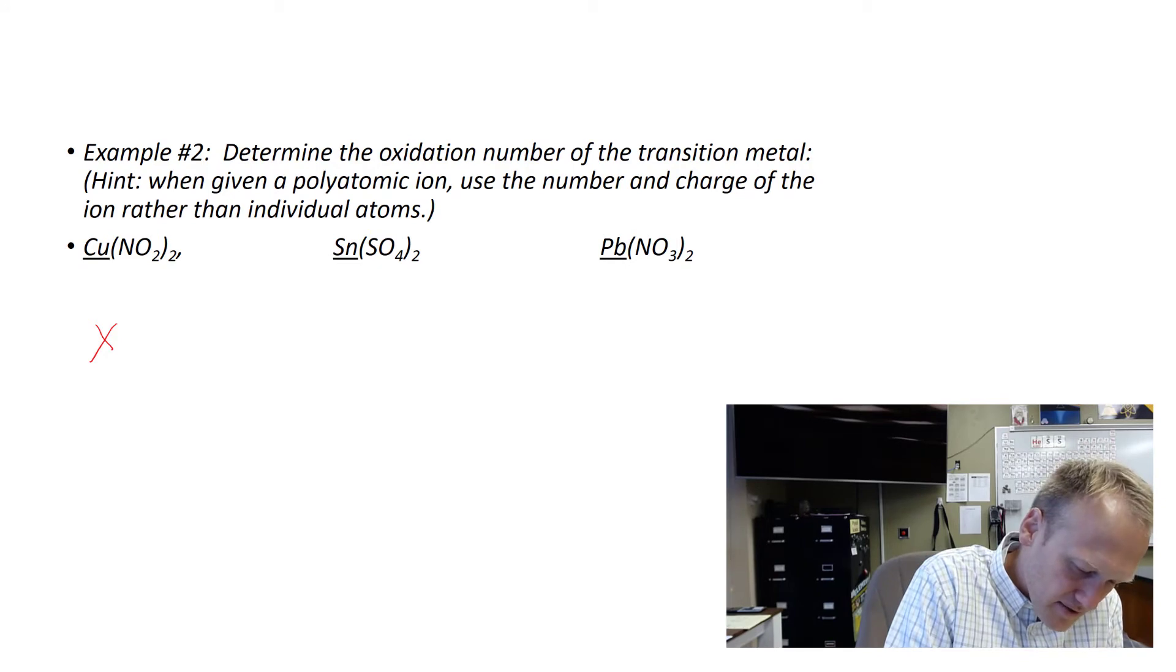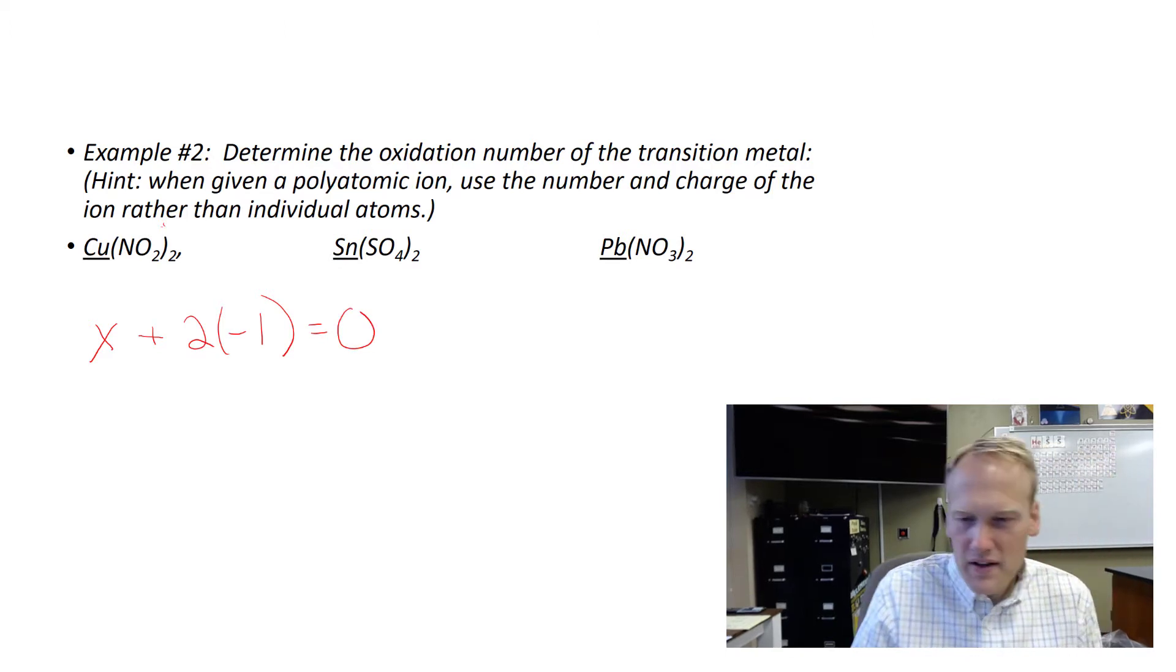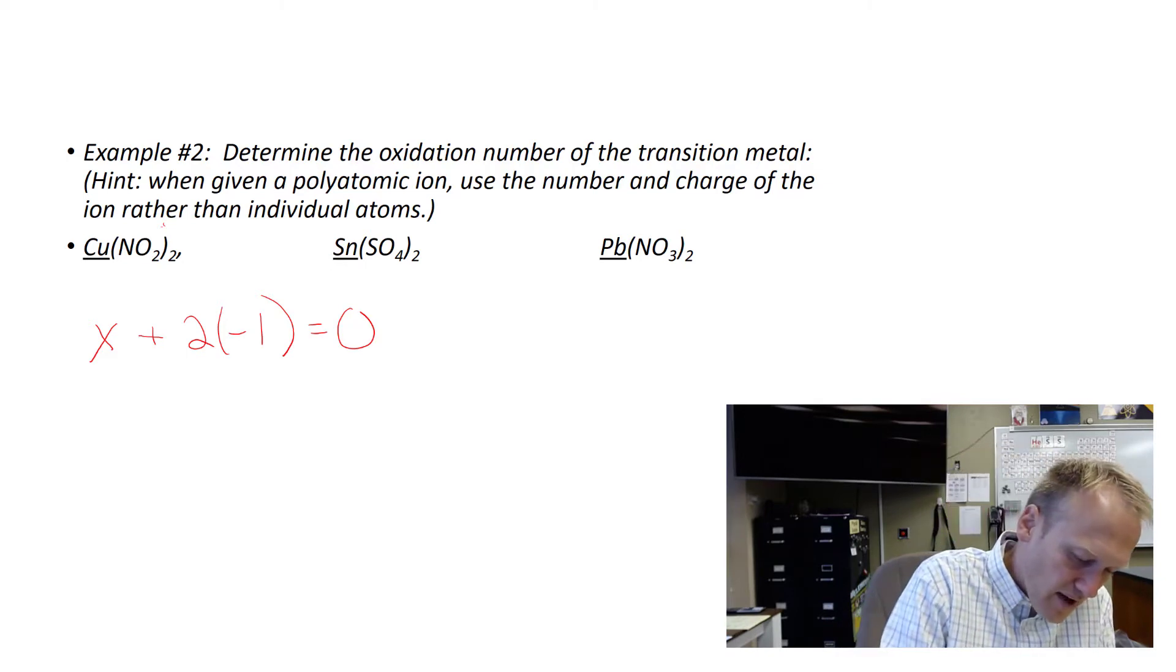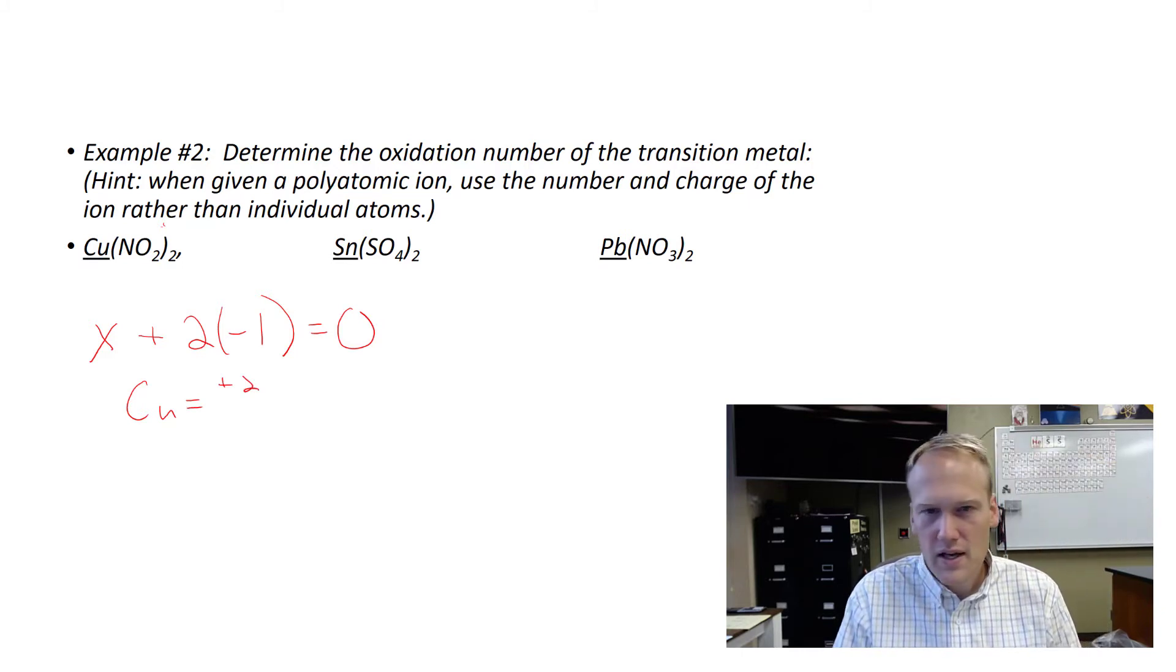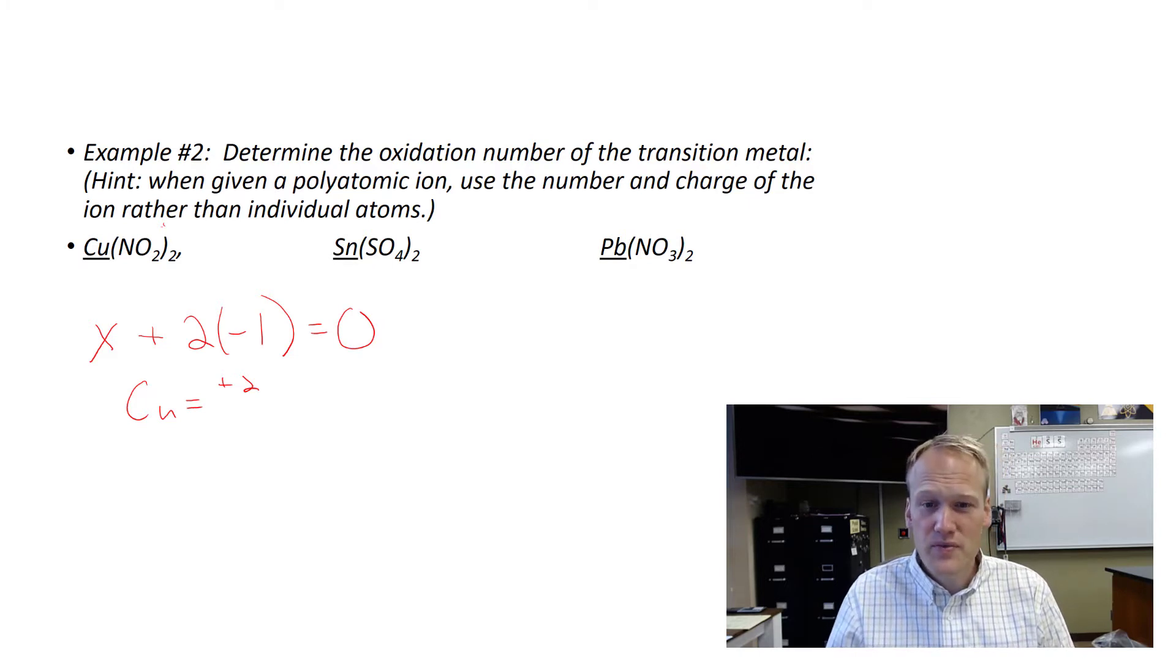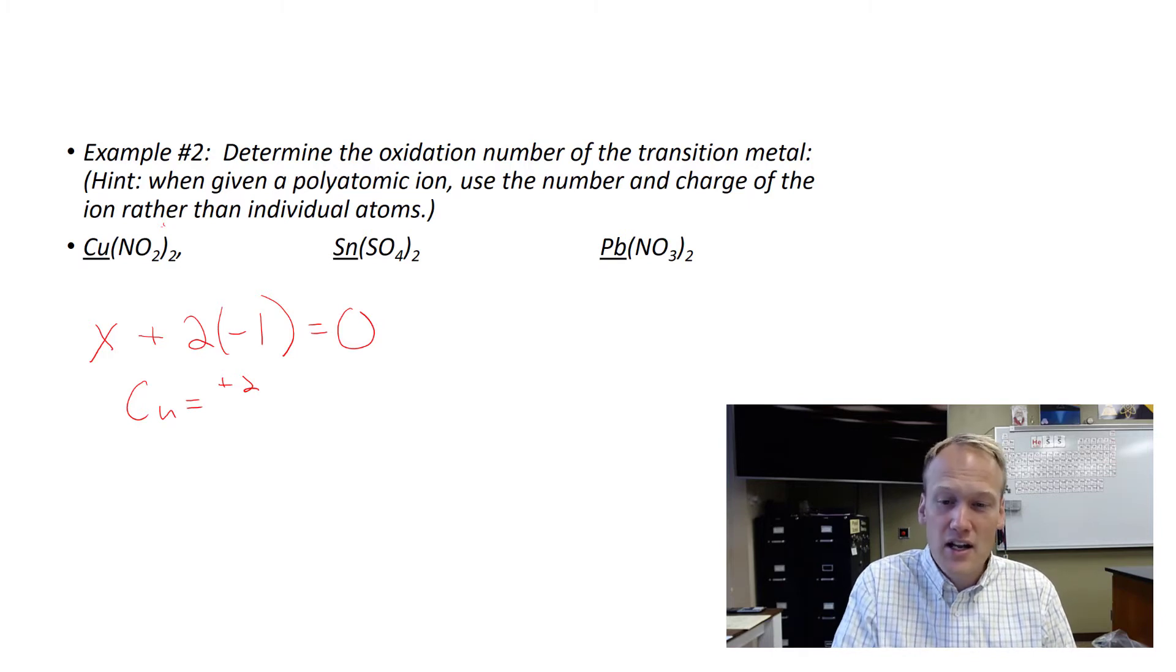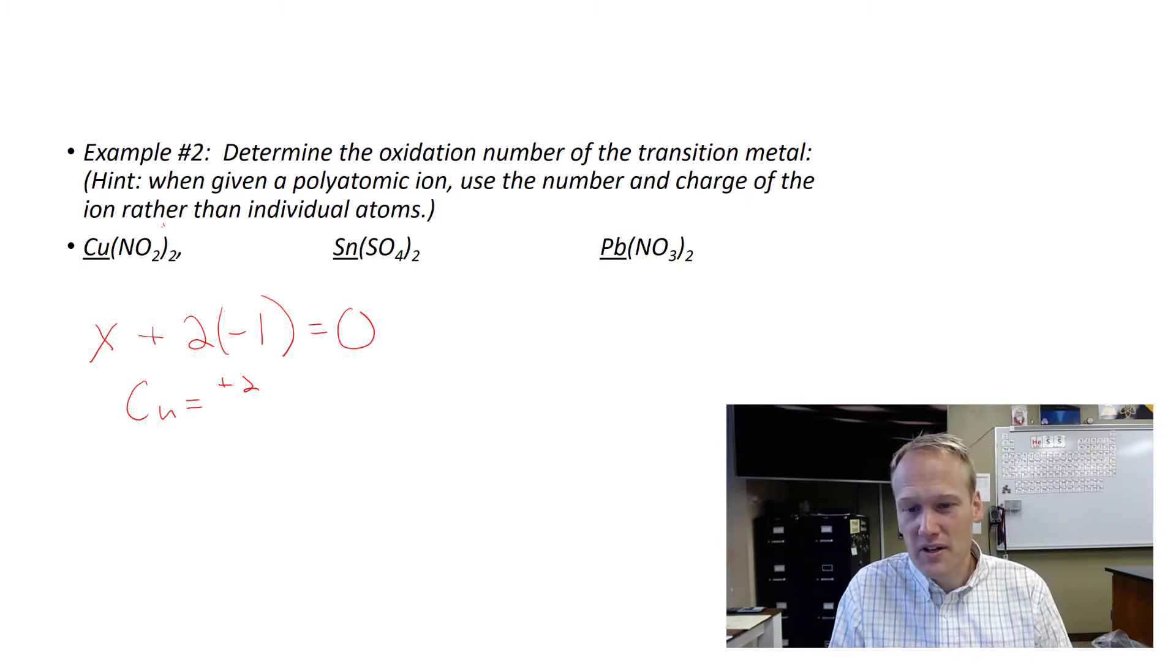So we're going to make copper x. Then we have two nitrates. So each nitrate is a minus one, and we have two of them, so two times minus one. And we know that the overall charge needs to equal zero. You can quickly solve for x and see that it is two. So that tells us that copper will have a perceived charge or an oxidation number of plus two. So remember from your polyatomic ion list that copper can have multiple charges. So if we want to know if this is copper 1 nitrite or copper 2 nitrite, we could do this basic algebra and figure it out.